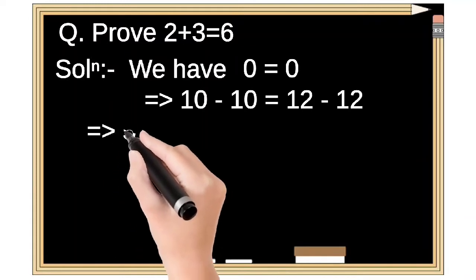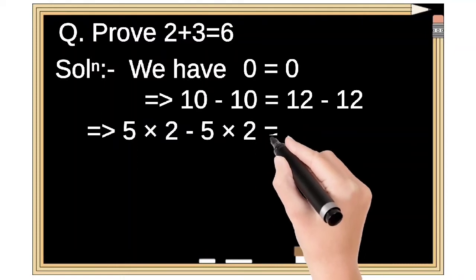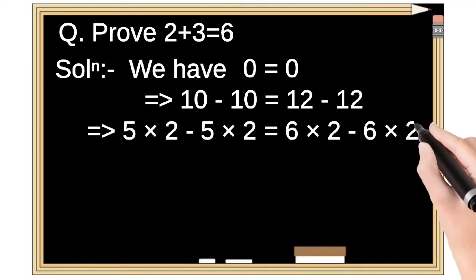Expanded form of 10 minus 10 is 5 into 2 minus 5 into 2. Expanded form of 12 minus 12 is 6 into 2 minus 6 into 2.